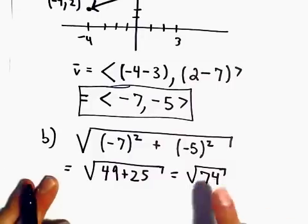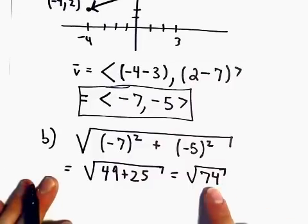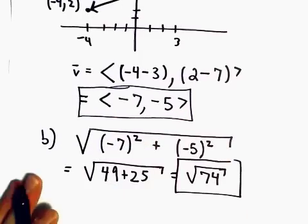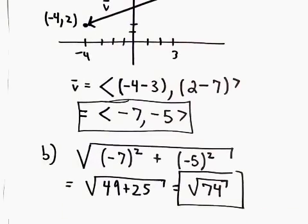We could factor that as 2 times 37, but 37 isn't going to factor any further. So I would simply stop here and say the length of our vector is the square root of 74.